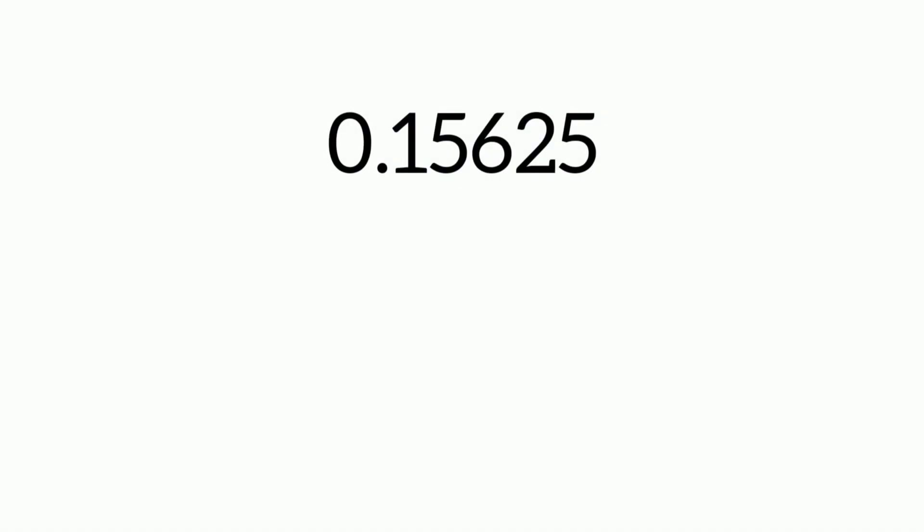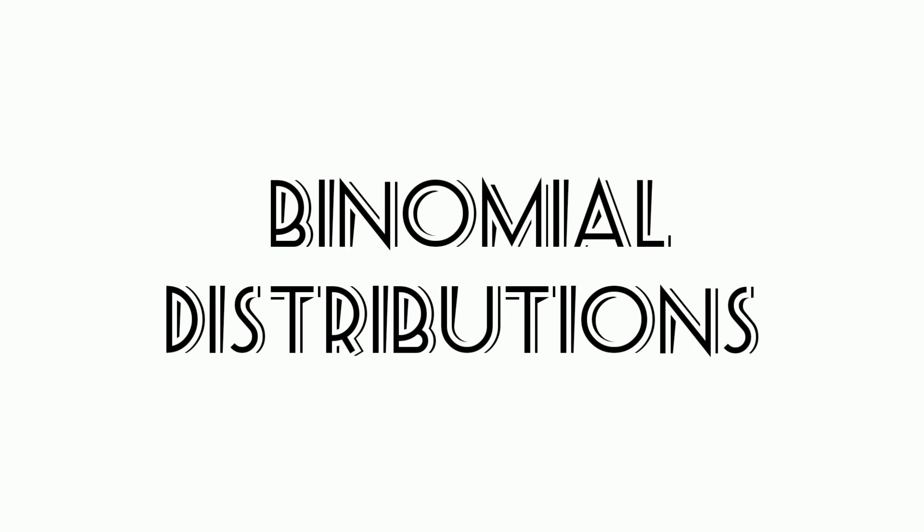This is the probability that in four out of five years there would be more visitors on the Central Bureau of Statistics website at the 7 to 12 month of the year. Now you've learned about the binomial distribution.